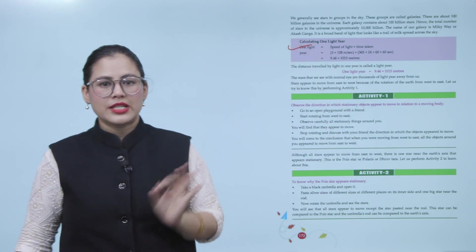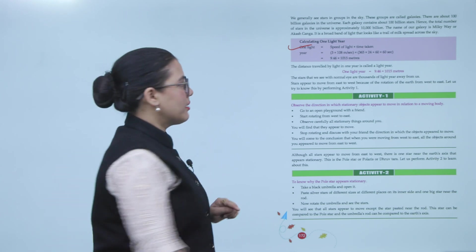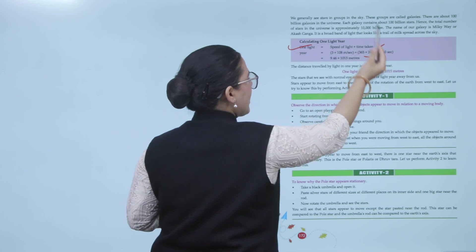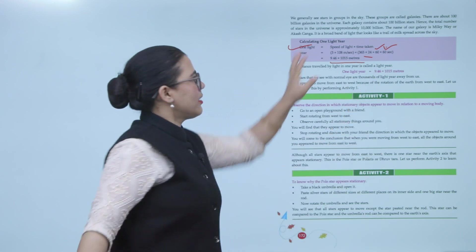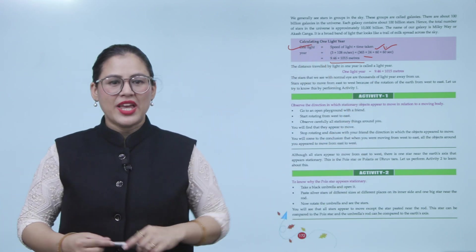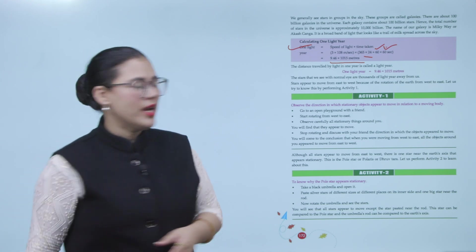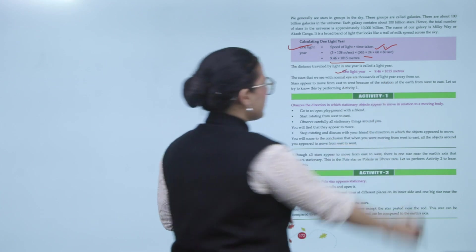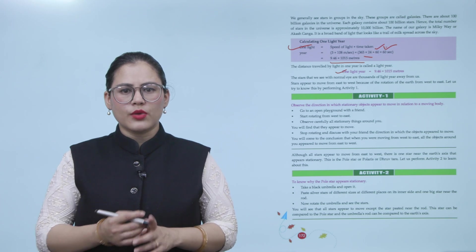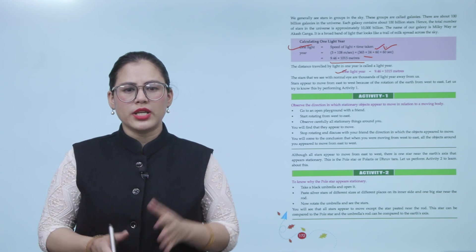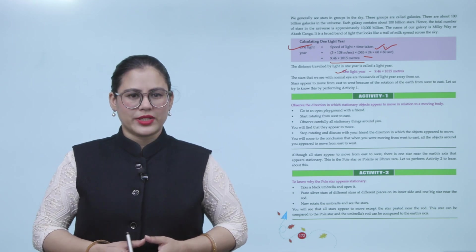One light year means speed of light into time taken. Speed of light, you know, and time taken: 365 days in one year, 24 hours in one day, 60 minutes in one hour, and 60 seconds in one minute. So, this is how we calculate one light year. Distance traveled by light in one year is called a light year. One light year is equal to 9.46 × 10^15 meters. The stars that we see with normal eyes are thousands of light years away from us. Stars appear to move from east to west because of the rotation of the earth from west to east. Let us try to know this by performing activity one.